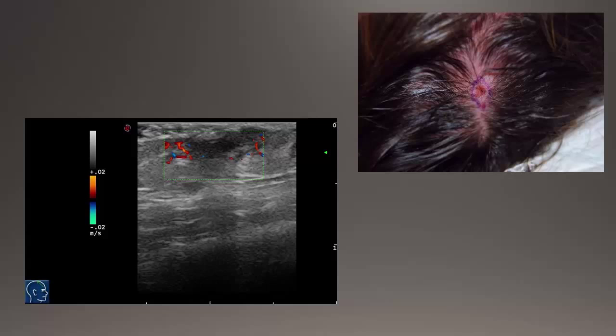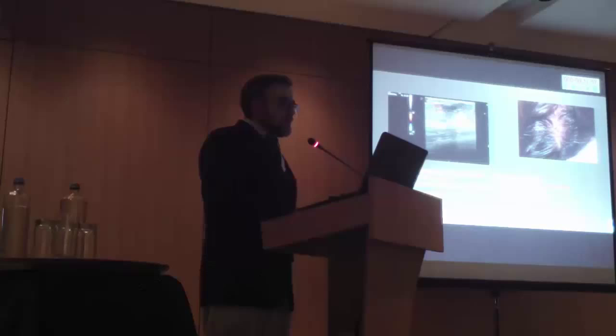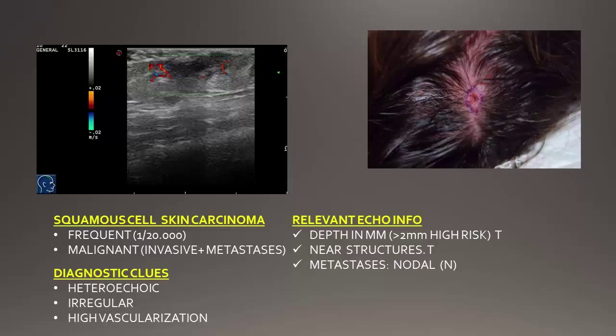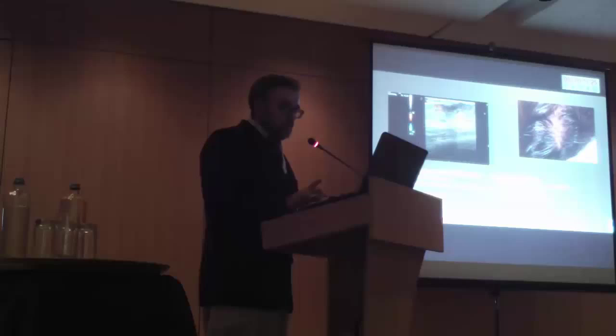The third most common tumor is squamous cell carcinoma. Squamous cell carcinoma has a mixed behavior between melanoma and basal cell carcinoma — it's invasive but also has the possibility of metastasis. The information we should offer our dermatologist should include the depth in millimeters, as we know that more than two millimeters has a high risk of recurrence, the nearest structures to prepare for surgery, and whether there is metastasis, mainly in the nodal aspect.